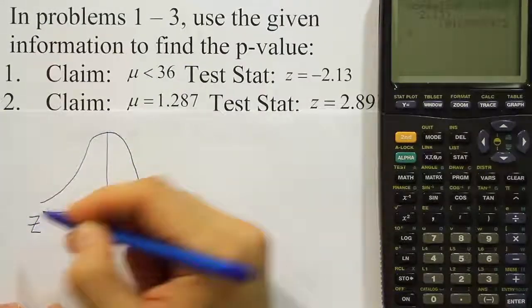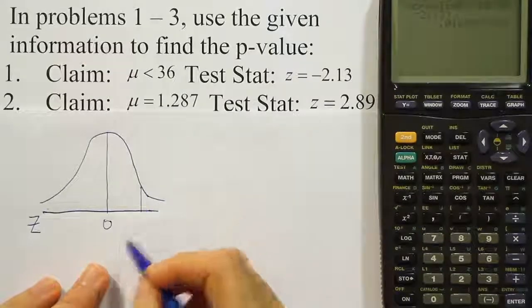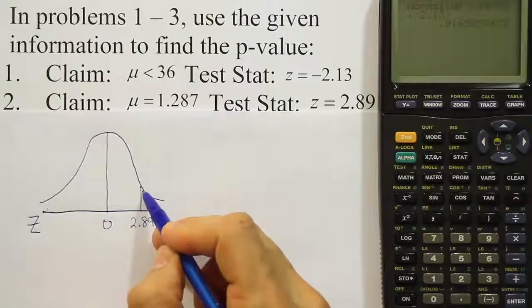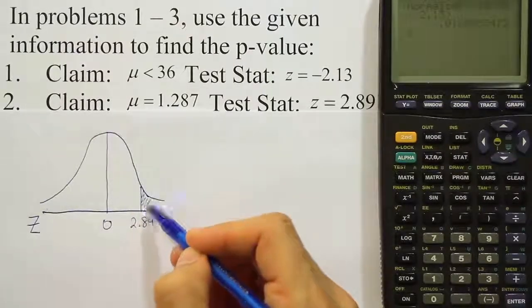And because z is 0 in the center of the z curve, we'll label the 2.89 on the right-hand side because it's a positive number. Now, the rule for a two-tail test is to find the tail area beyond the test stat.